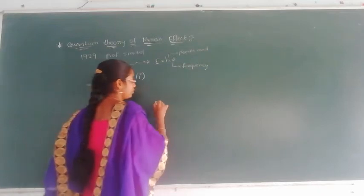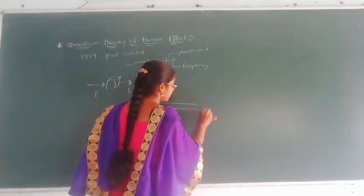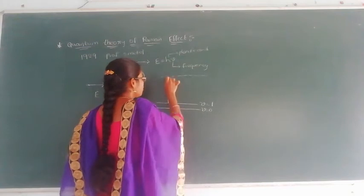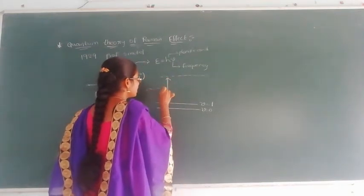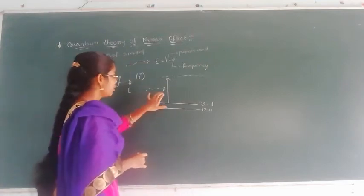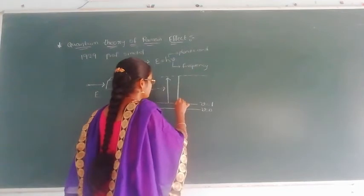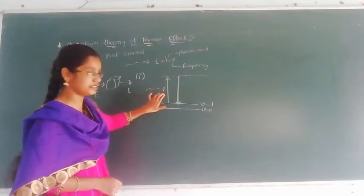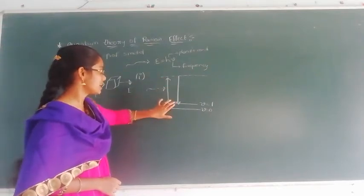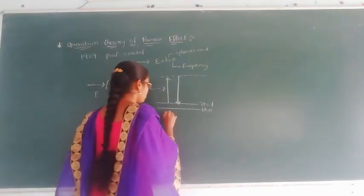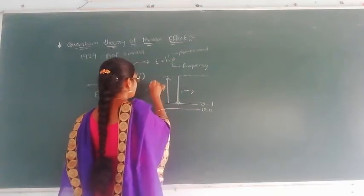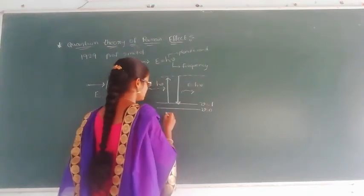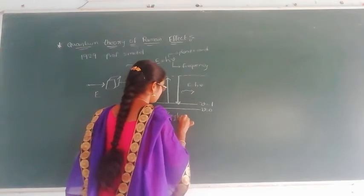In this first case, the scattered line has the same energy as the incident light and the molecule remains unchanged — this is the unmodified line. The molecule goes to a higher state and comes back to the same energy level. The energy is E equals h-nu, and the same amount of energy comes out. This is called Rayleigh scattering.